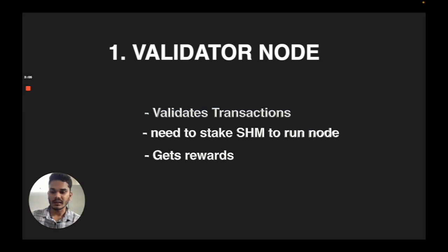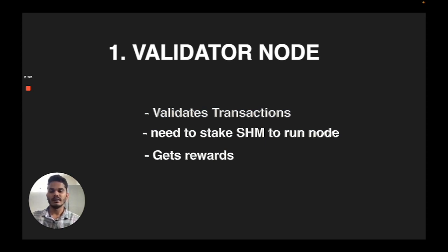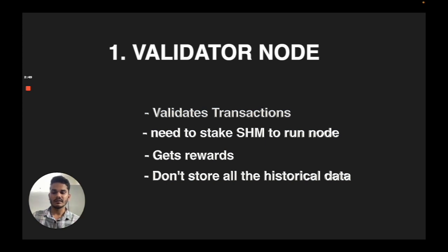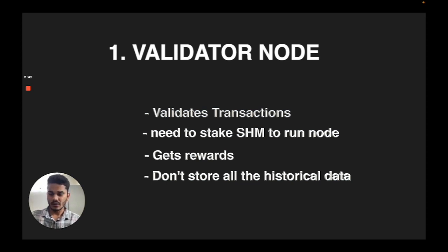The main difference with a validator node is that it doesn't actually store all the historical data of the blockchain as a regular node does. These validator nodes are actually lightweight nodes — they don't have the total historical data but do have a part of the data.